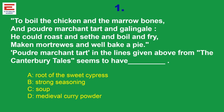Look at the lines again: powder, merchant, tart. Tart is a kind of substance that is added. Look at the options: root of sweet, cypress — that is a distant option; strong seasoning — totally irrelevant. So you have to choose between soup and medieval curry powder. Soup is a kind of dish, but the target phrase 'powder' is something that is added. Based on this logic, the answer is medieval curry powder.